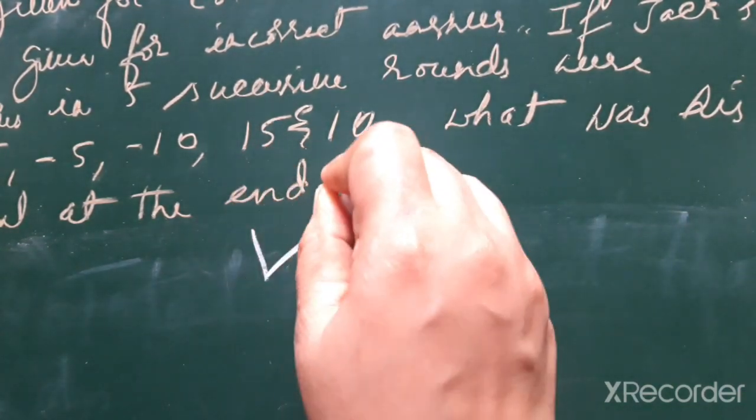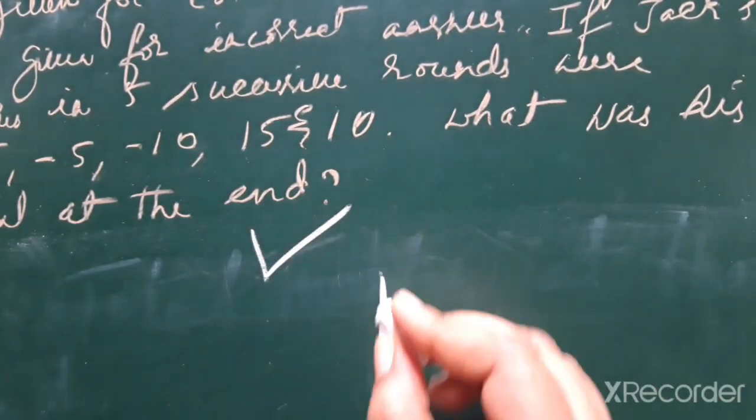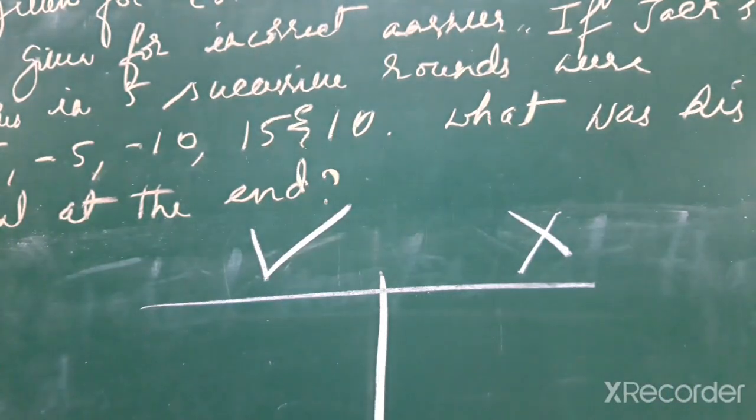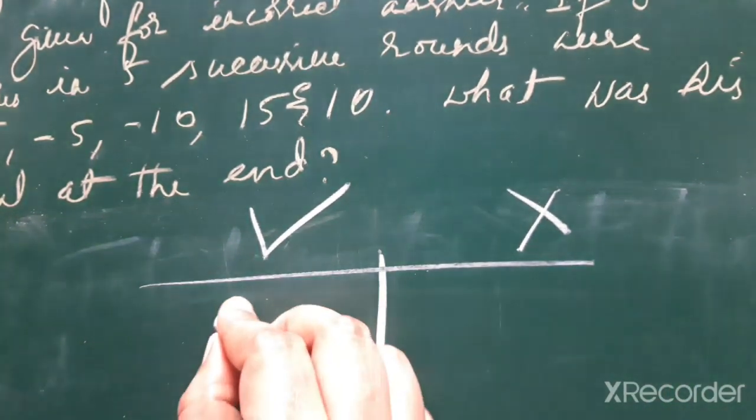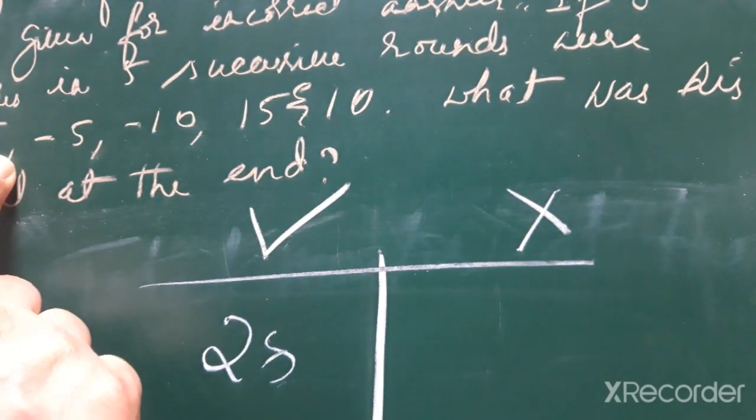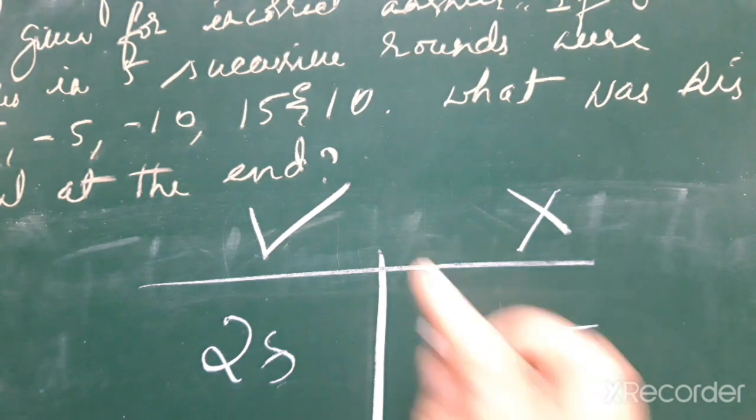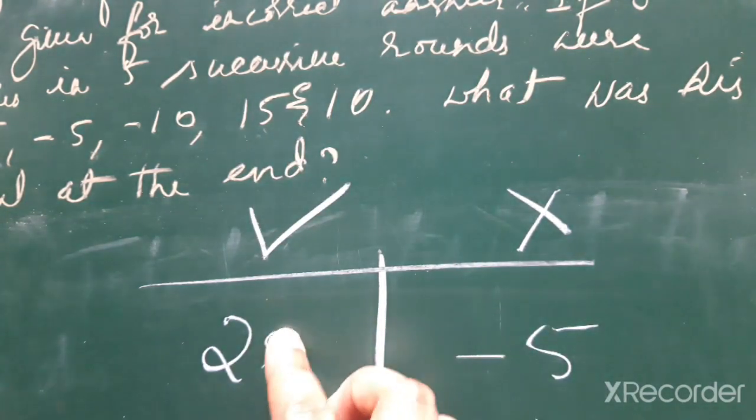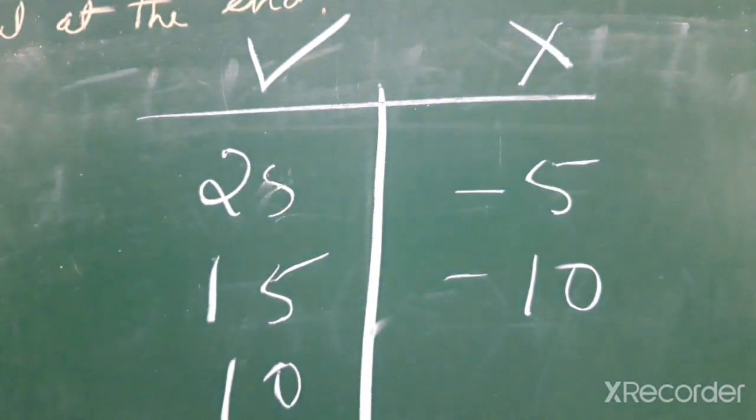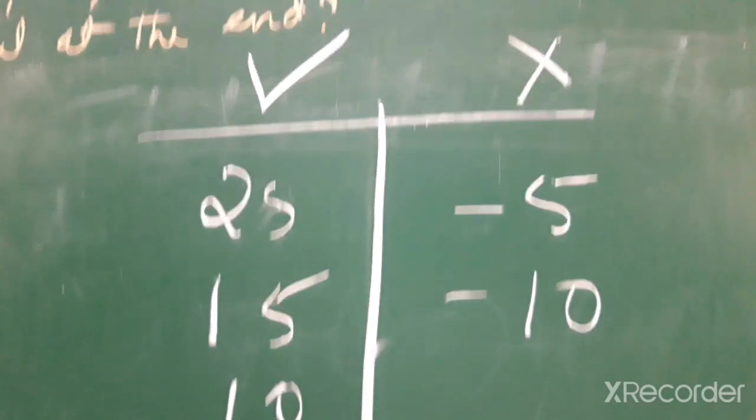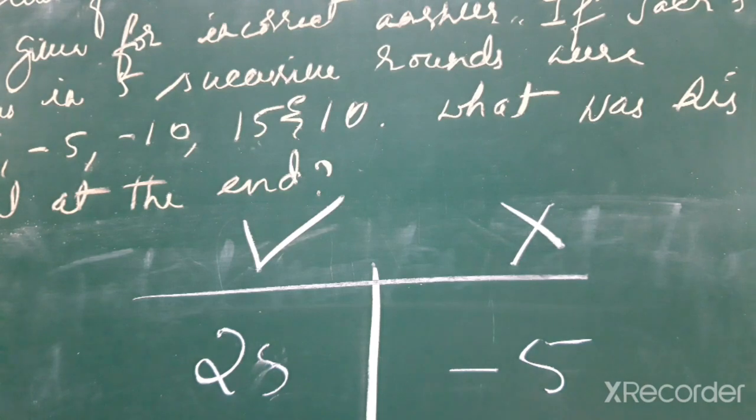Positive marks for correct answer and negative marks for wrong answer in a quiz competition. So 25 for a correct answer, -5 for a negative answer, -10 for negative answer, 15 for positive answer, and 10 for positive answer. We can find the total by adding and subtracting. So how to find the total with the integers now?